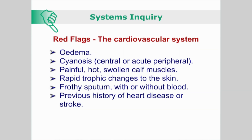Edema, cyanosis — whether central or acute peripheral — painful, hot, swollen calf muscles, rapid trophic changes to the skin, copious frothy sputum with or without blood, and previous history of heart disease or stroke.